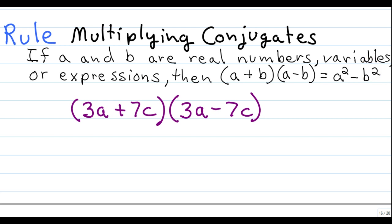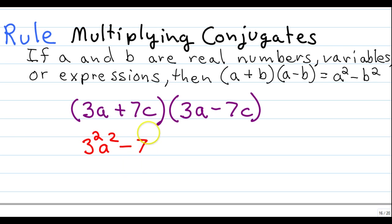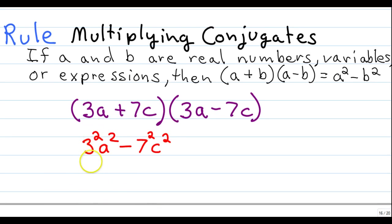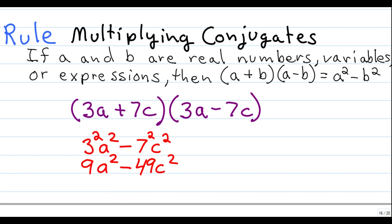Following that rule: what's in our a position is 3a, so we raise 3 to the second power and a to the second power. Then we write a minus sign and raise what's in the b position — 7c — to the second degree, meaning 7 squared and c squared. Simplifying: 3 squared is 9, carry down a squared, minus 7 squared which is 49, carry down c squared. We get 9a squared minus 49c squared — the same result as the FOIL method.